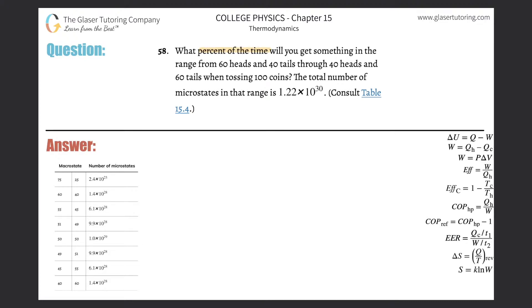Number 58. What percent of the time will you get something in the range from 60 heads and 40 tails through 40 heads and 60 tails when tossing 100 coins? The total number of microstates in the range is 1.22 times 10 to the 30th.